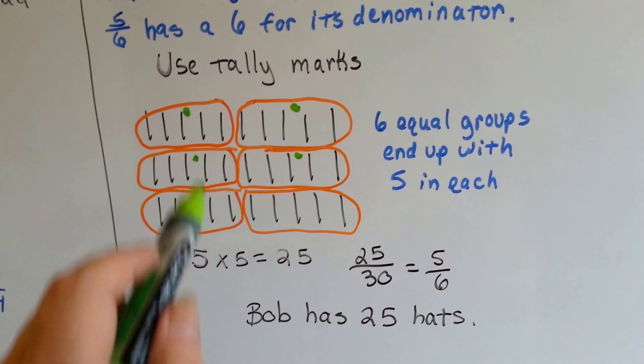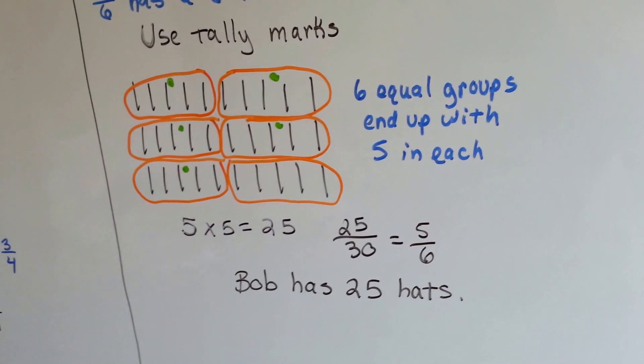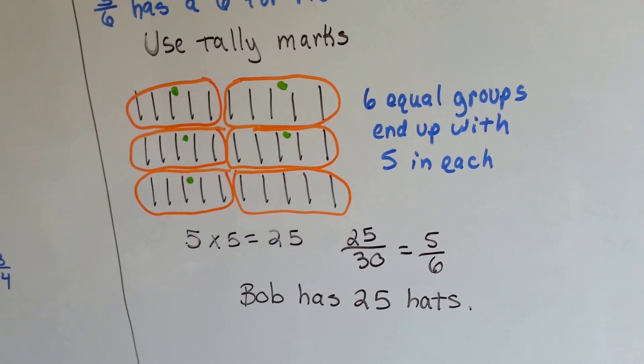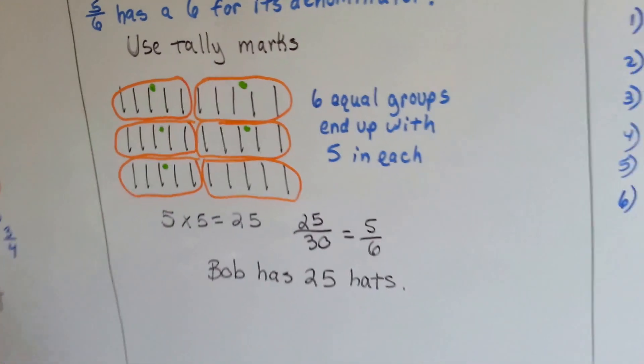So we know 25 out of 30 is equal to five-sixths. So we know he has 25 hats. So we can use tally marks, we could have used circles to represent the hats.